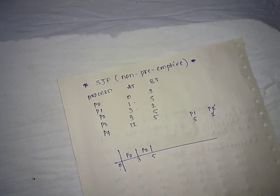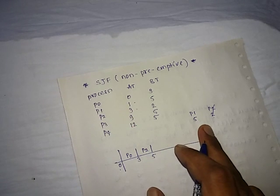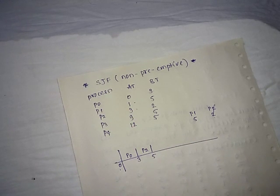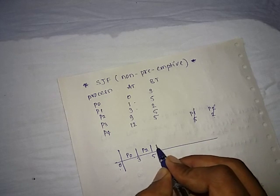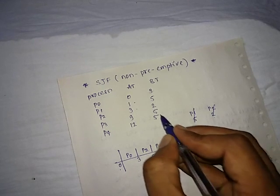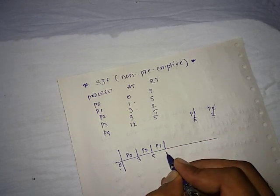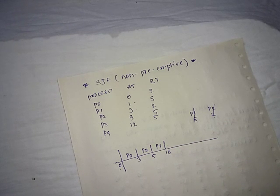Again check, is there any process up to 5? No, but we are having P1 process which was previously in queue. So schedule this P1 process. Its time was 5, so 5 plus 5 becomes 10.